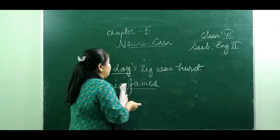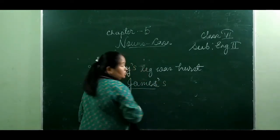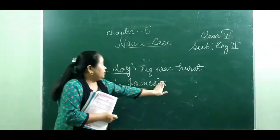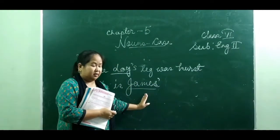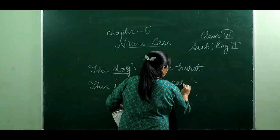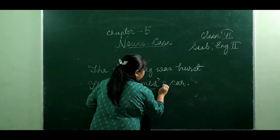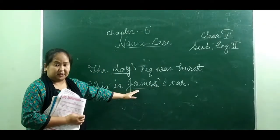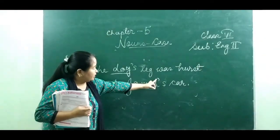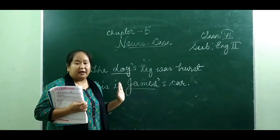So when a singular noun ends in S, only the apostrophe is accepted. Even if you add apostrophe and S, that is also accepted — both are acceptable. So if the singular noun ends in S, you can write 'James' card' with only the apostrophe, or also with apostrophe and S — both are accepted.